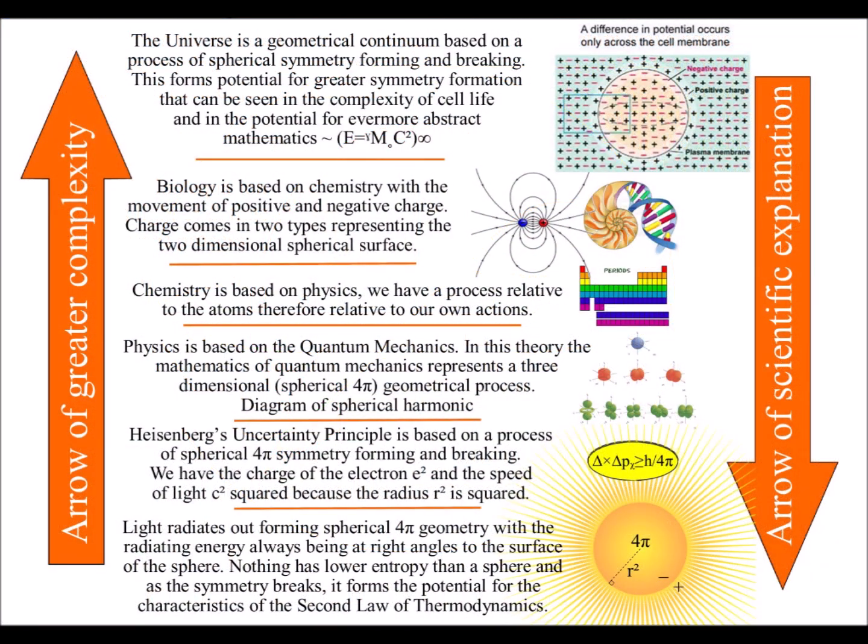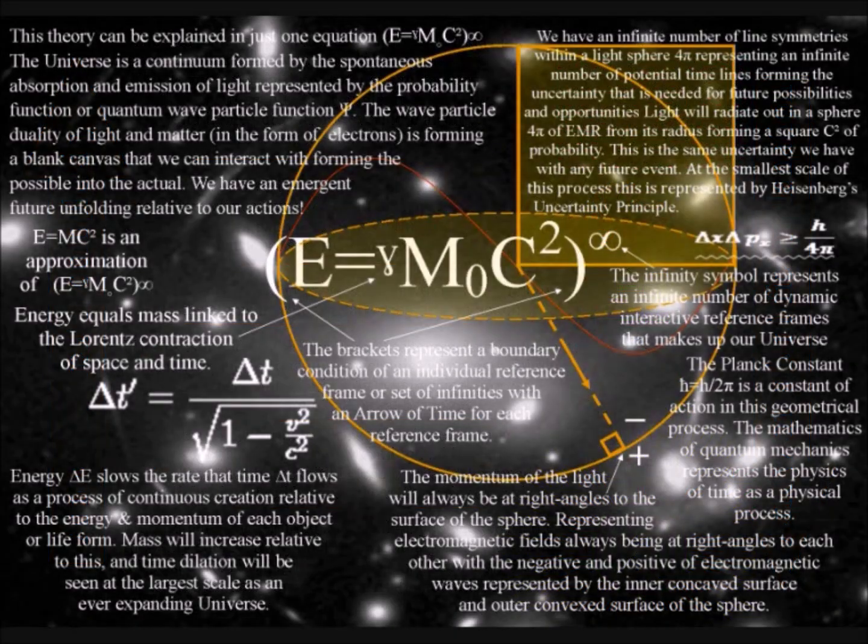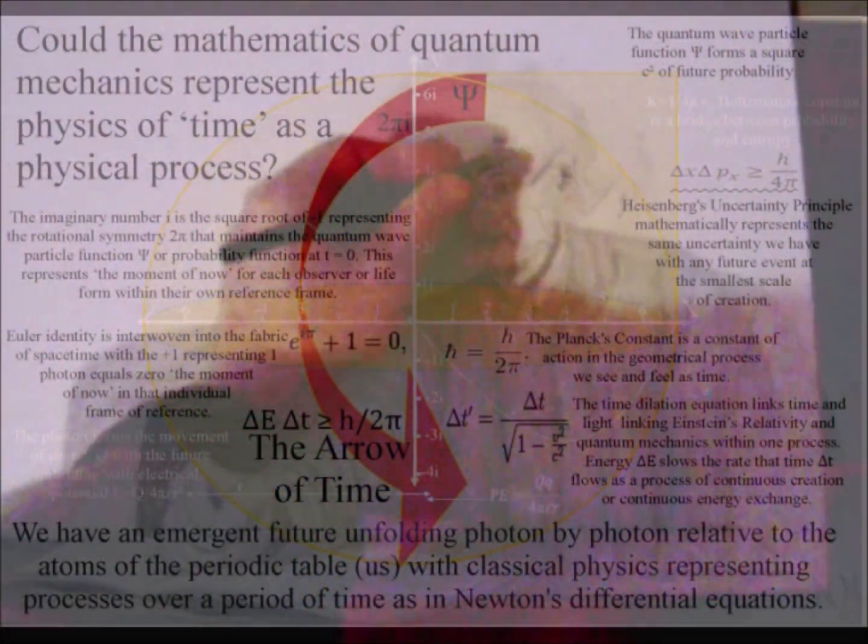This process also forms the potential for the formation of greater symmetry that we see in the complexity of cell life and in the potential for evermore abstract mathematics. But above all, this process forms an uncertain future that is relative to the energy and momentum of our actions.